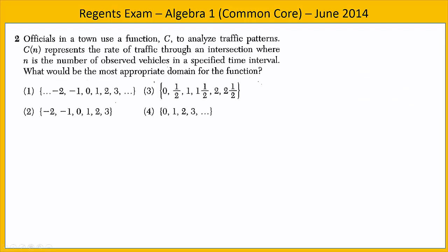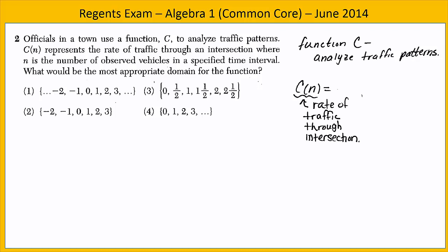In exercise two, we're told that the officials in a town are using a function called C to analyze traffic patterns. C of n represents the rate of traffic through an intersection and n is the number of observed vehicles in a specified time interval, in other words, the number of cars that come down the road. We're asked which of these choices would be the most appropriate domain for the function. Now remember, domain refers to the inputs. In this exercise, n is the inputs, the number of vehicles, and so the inputs have to make sense for a number of cars that we would see traveling down the road.